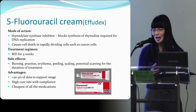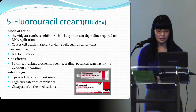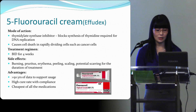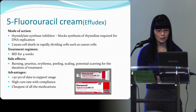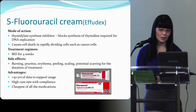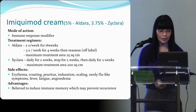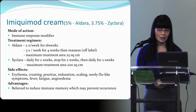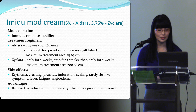Efudex (5-fluorouracil) is an anti-metabolite that blocks synthesis of thymidine required for DNA replication, causing cell death in rapidly dividing cells like cancer cells. Treatment regimen is twice a day for four weeks. Side effects are burning and pruritus throughout the treatment period, with about a two-week healing phase afterwards. It's been around forever, has a high cure rate with good compliance, and is the cheapest of all the medications.